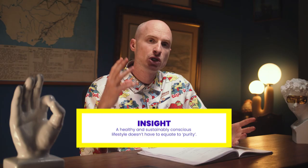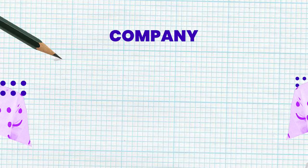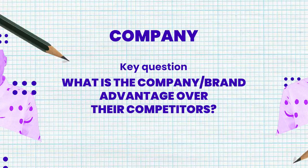The key question for the company quadrant is: what is the company's brand advantage over their competitors? This is where we review the brand's performance and where they fit into the category — both financially and what they stand for. Somewhat similar to the category analysis, but here we are looking at our advantage, our USP, our strength — the thing that will give us cut-through but is ownable by us as a brand while solving the customer problem.